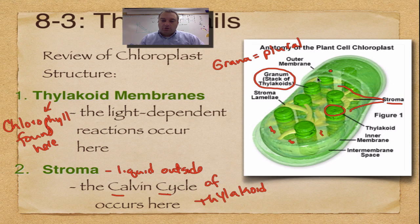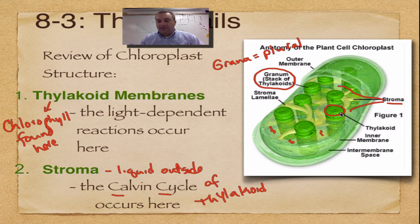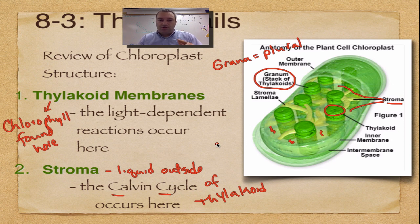Let's do a quick review. The chloroplast is the site of photosynthesis. It's got two major parts: number one is the thylakoid — little green poker chips. A stack of poker chips is called a granum, and multiple stacks are called grana. The light-dependent reactions are going to occur in the thylakoids. The Calvin cycle is going to occur in the stroma, which is the fluid surrounding the thylakoids. This is a short episode covering just one slide, but it's really important — you need to know the structure of the chloroplast because it's going to make the rest of these screencasts make sense.